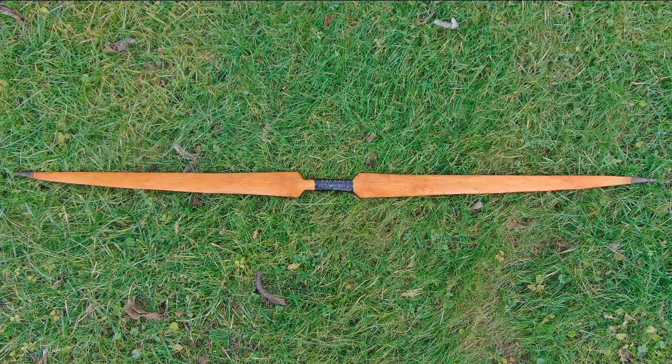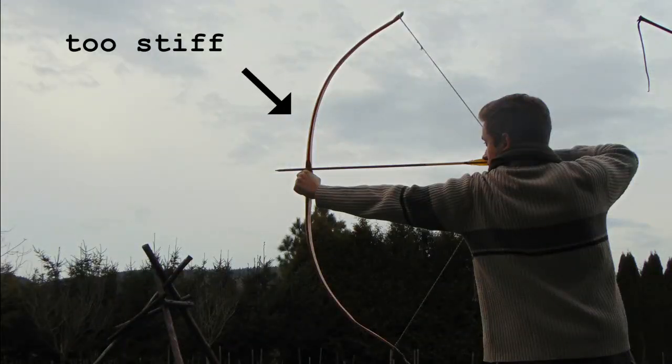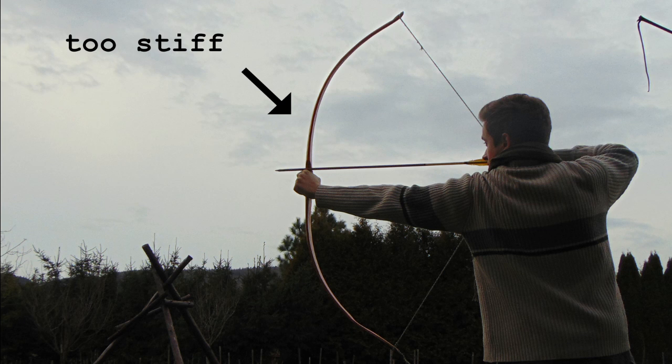And here we go with another hazel bow. This one was built in pyramid style. Nevertheless, the tillering was a bit off here. The upper limb is too stiff, especially inners. Despite it, it hasn't taken too much set and performed pretty well.